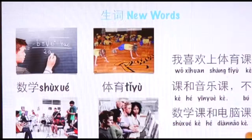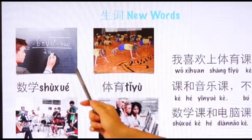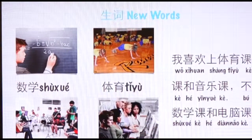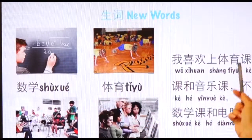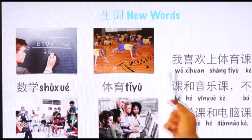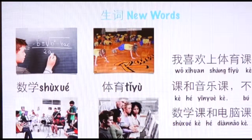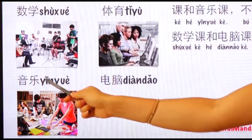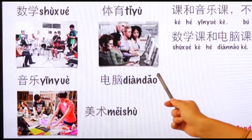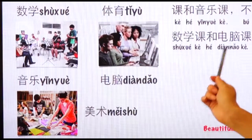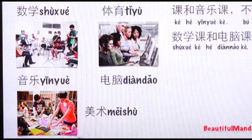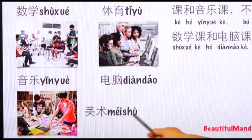Now let's learn something more. You can see those are all different kinds of classes you take in school. 数学 means math; math class is 数学课. 体育课 is physical training class. 音乐 means music; music class is 音乐课. 电脑 is computer. 美术课 — 美术 means art.